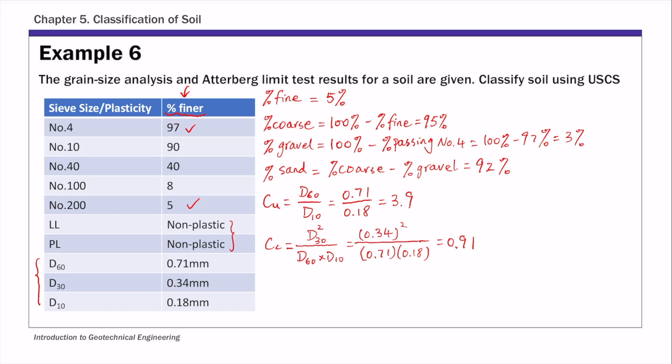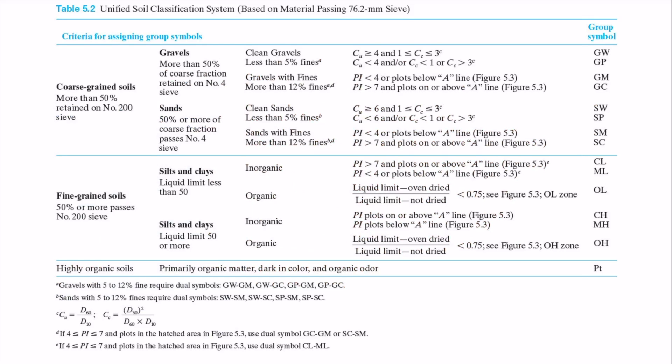Now let's look at table 5.2 to find the group symbol first. So this is the group symbol table. Let's start with the left hand side. We have 95% of coarse, so we're going to use this top portion for coarse-grained soils. And then 92% of the soil is sand and 3% is gravel. So we have more sands than gravel, we're going to pick sands.